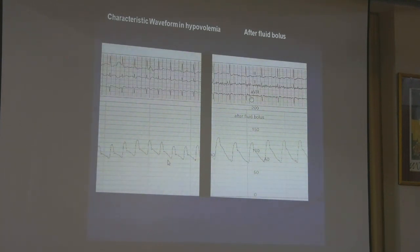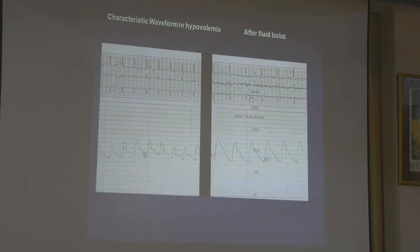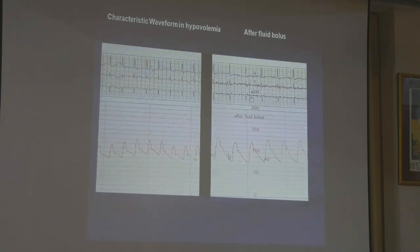This is a typical patient with hypovolemic shock. You can see that suddenly the pressure drops — systolic pressure, diastolic, pulse pressure, everything comes down. The characteristic waveform in hypovolemia is that the dicrotic notch occurs very low on the dicrotic limb, and the diastolic portion following the dicrotic notch is very slow and low. Then when you give a fluid bolus of 200–300 mL, the pressure waveform changes — the systolic pressure comes up, the pulse pressure becomes normal, and the dicrotic notch moves up from low to a higher position. Looking at this, you can identify that the patient is in hypovolemia.